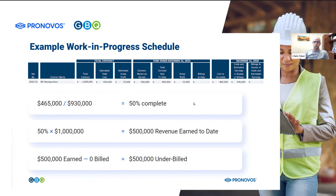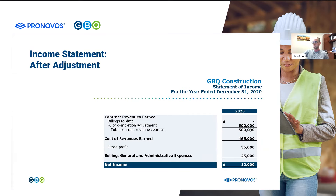So we walked through our calculation: we've got $465,000 of costs divided by our $930,000 estimate — we're 50% complete on this job. We take that 50% complete times our contract amount of a million dollars, and we've actually earned revenue of $500,000. We compare that to our billings — again, we weren't able to bill anything — and in this case we have a $500,000 under billing, which makes sense. So how that actually runs through the financial statements is I now need to post an adjustment to bring my revenue up. Now my income statement looks a lot more normal. The whole idea is we're matching our expenses with our revenues so that they're hitting at the same time, making our income statement look a lot more reasonable.